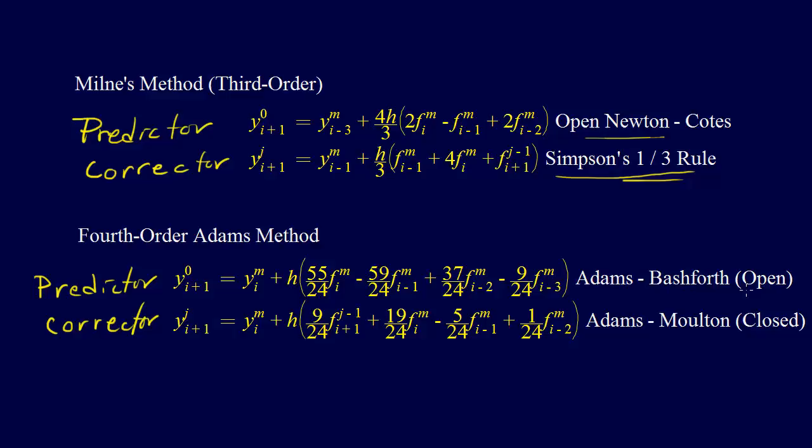So we've got closed open formulas, and similarly, we have the open formulas are Adams-Bashforth. We have the closed Newton-Coates formulas, that's Simpson 1/3 rule, Simpson 3/8 rule, and so forth. We similarly have the Adams-Moulton methods, and we're looking just here at the fourth order Adams-Moulton and Adams-Bashforth, but they have other orders of the same method.